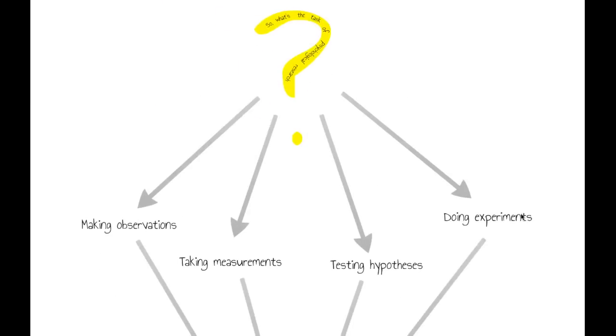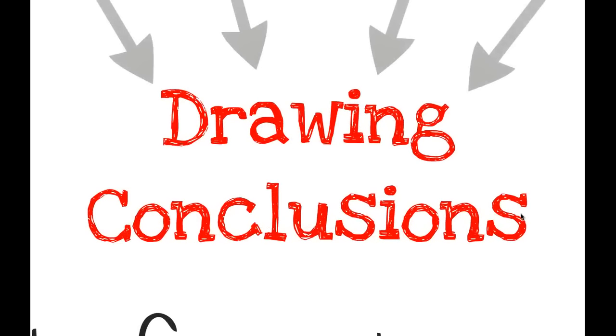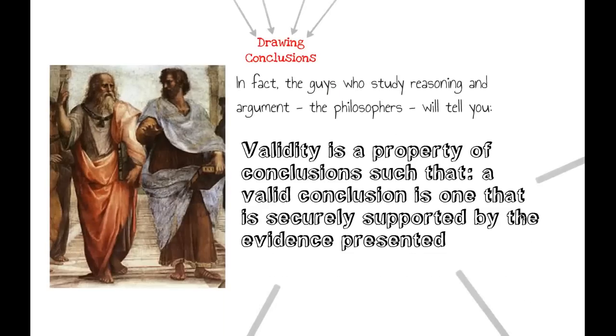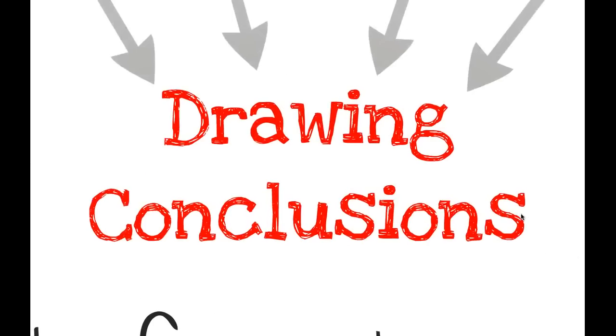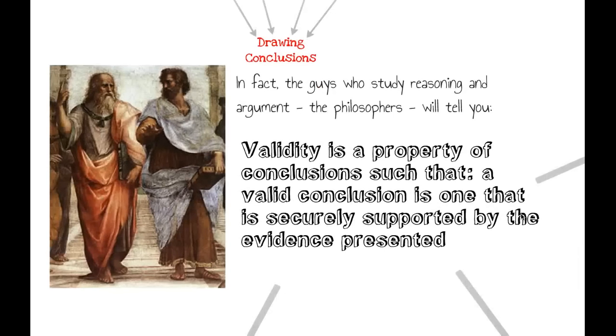So if those are all of our subtasks, our main task, of course, is to draw a conclusion. If you ask the philosophers, they'll tell you that validity is a property of conclusions. A valid conclusion is one where the evidence that you've collected securely supports the conclusions you're trying to draw.